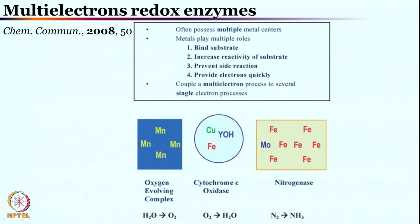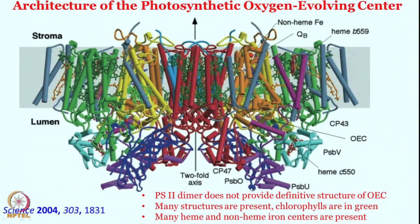This enzyme which is involved in water to oxygen conversion is called the oxygen evolving complex, OEC. A 4-manganese, 1-calcium center is involved for such transformation, and we have seen earlier that cytochrome C oxidase converts water to oxygen. Overall, these two are very important enzymes and they are involved in multi-electron processes.